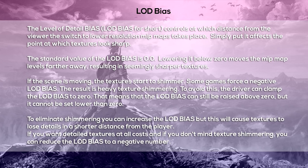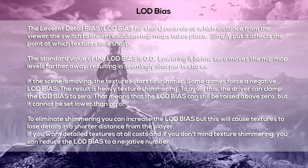Level of Detail bias — LOD bias for short — controls at which distance from the viewer the switch to lower-resolution mip maps takes place. Simply put, it affects the point at which textures look sharp. The standard value is 0.0. Lowering it below zero moves the mip map levels farther away, resulting in seemingly sharper textures, but if the scene is moving, textures start to shimmer. Some games force a negative LOD bias, causing heavy shimmering, so drivers can clamp it to zero. Increasing the LOD bias above zero causes textures to lose detail at a shorter distance. Reducing it to a negative number gives detailed textures at the cost of shimmering.